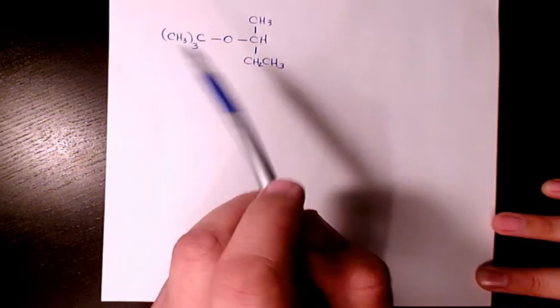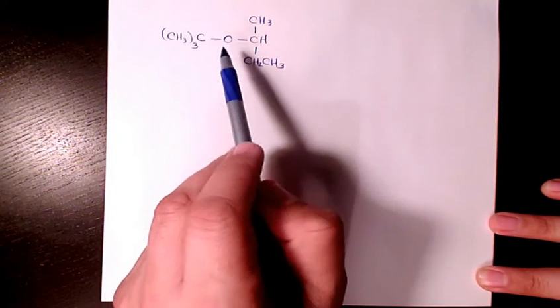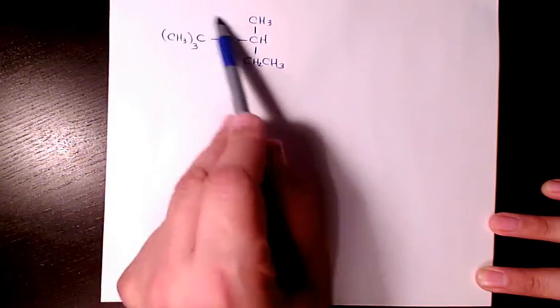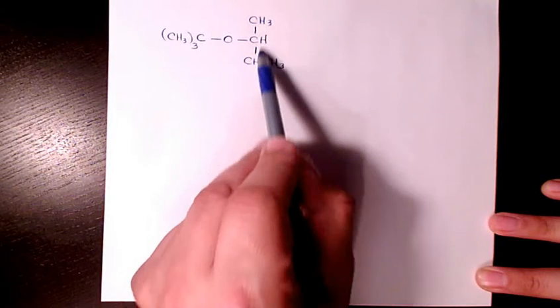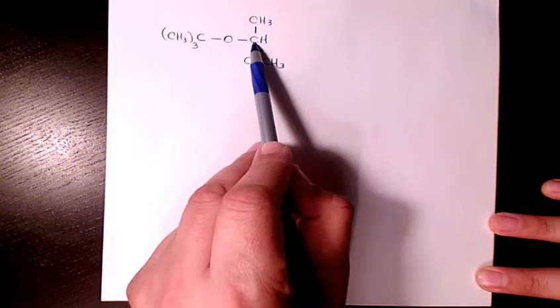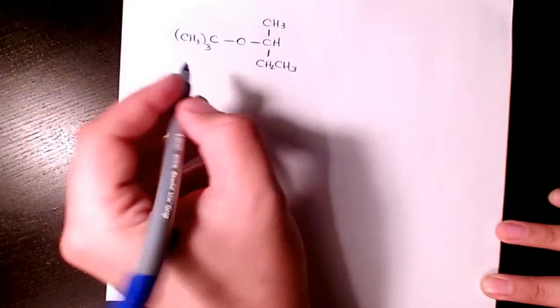Here we have tertiary butyl, and here we have normal butyl or secondary butyl because that's the second carbon. So if I want to have the common name, I'm gonna say tertiary butyl (t-butyl), and here we have secondary butyl.